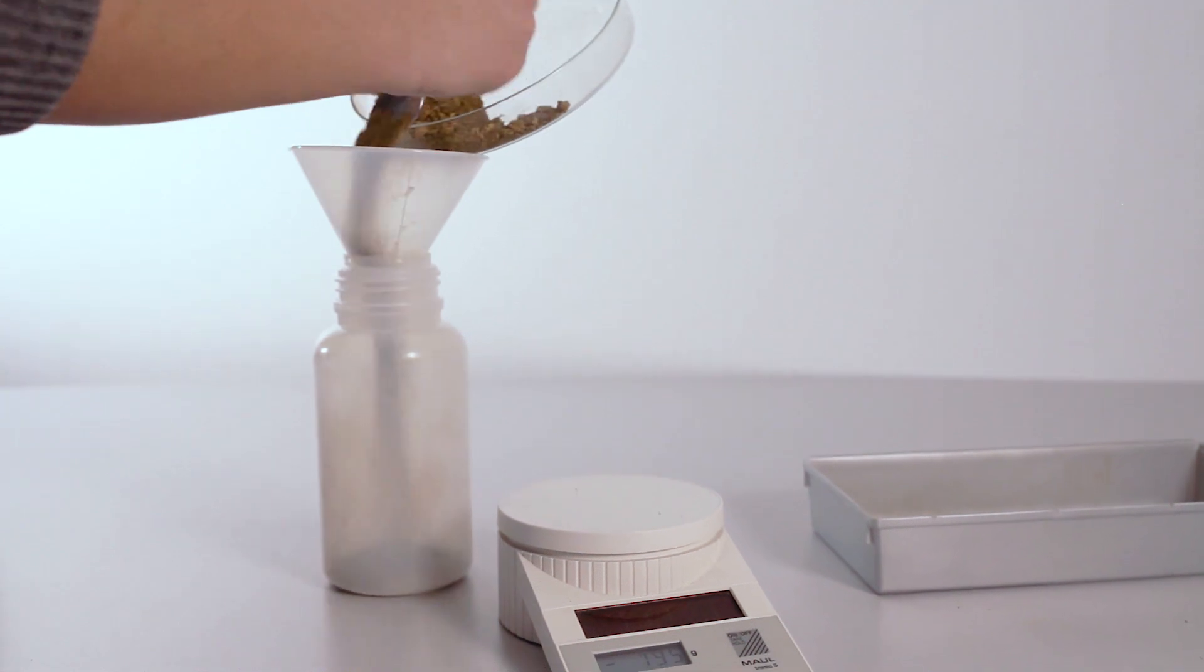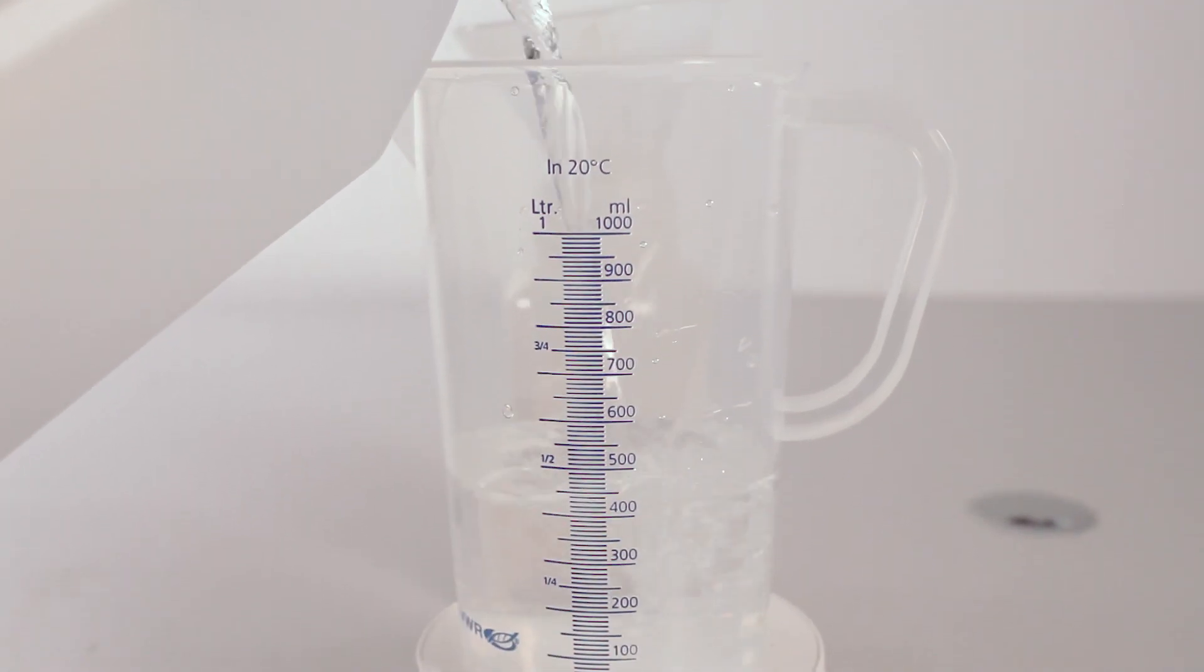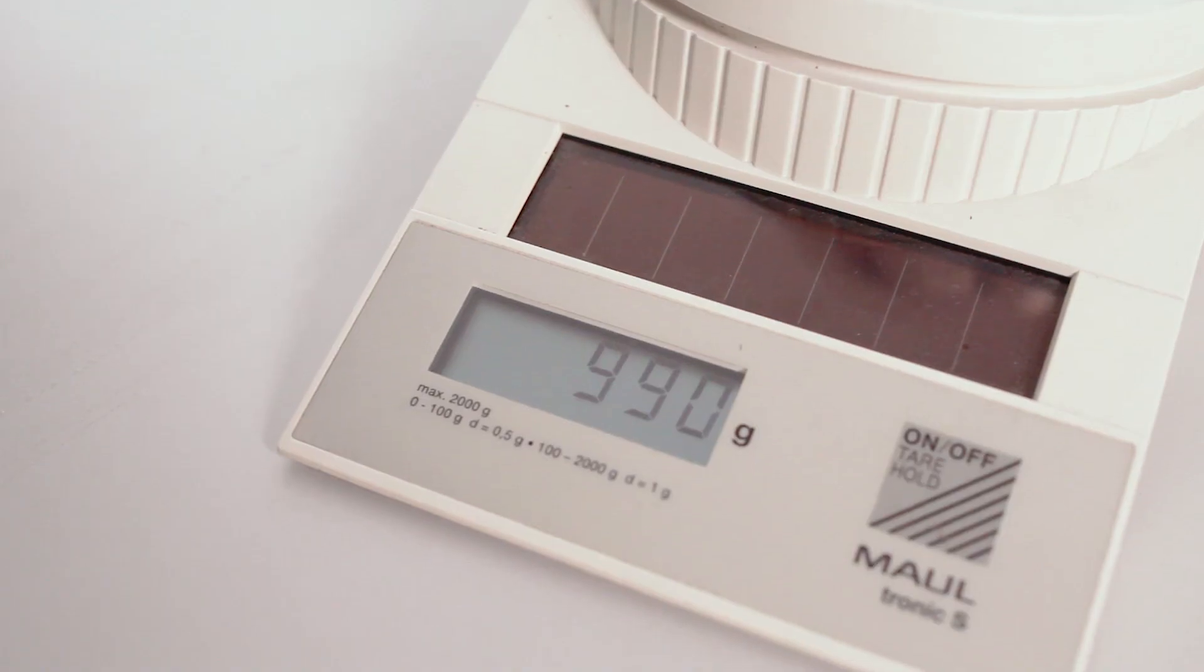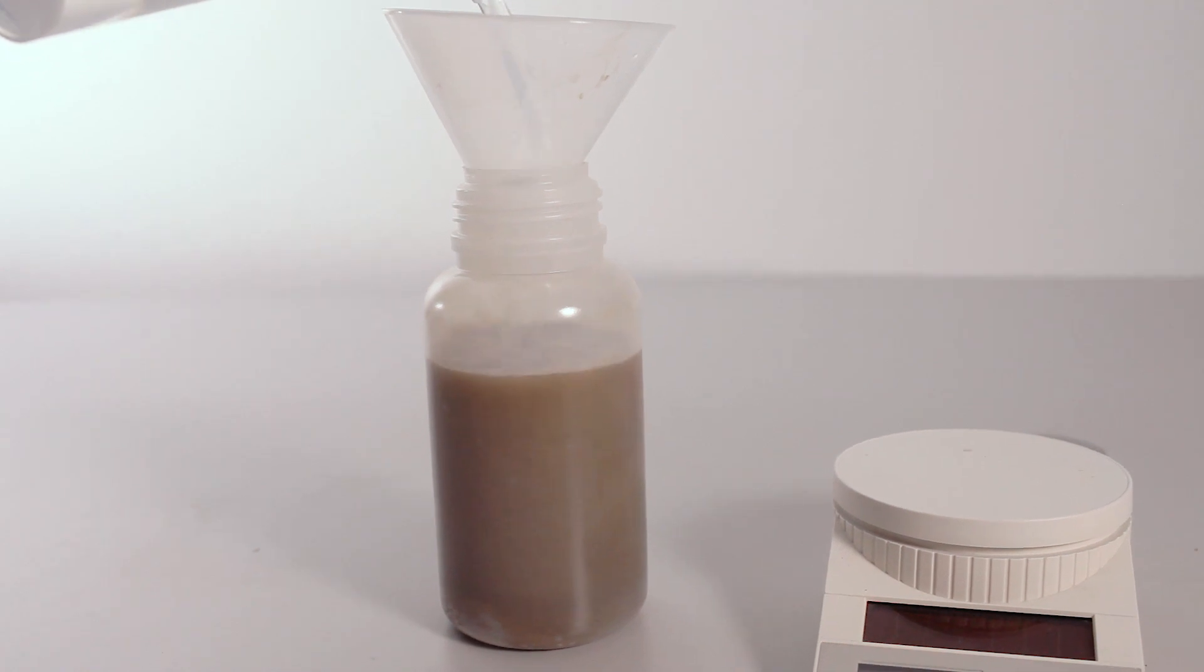Put the sample into an extraction bottle and add 990g of distilled water. The EC and pH value of the solution can be measured before adding the extraction concentrate.